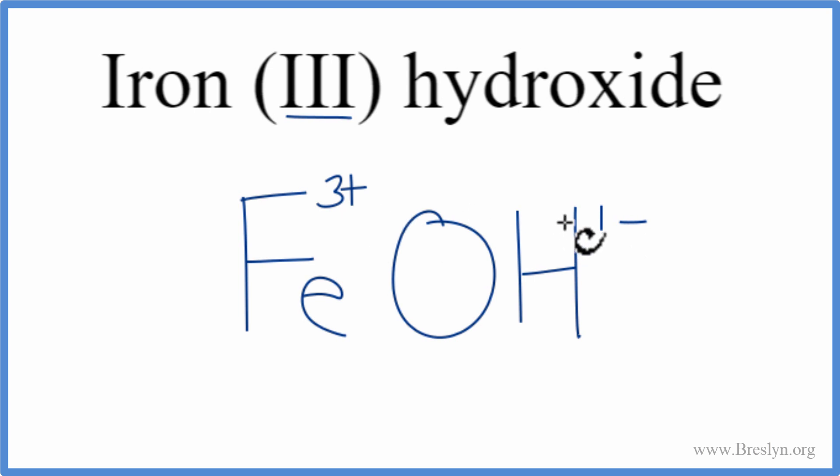3+ and 1- don't add up to zero, so we don't have a net charge of zero, and that's what we need to get for the neutral compound, iron (III) hydroxide.